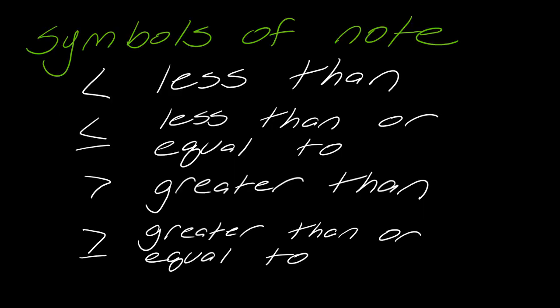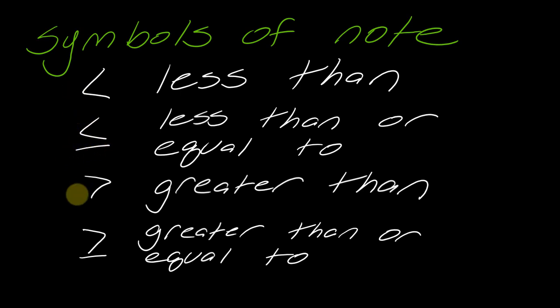With linear inequalities, the first thing we've got to review are just the symbols. So with inequalities you have these four symbols: less than, less than or equal to (it's got that little bar), greater than, and greater than or equal to (it's got that bar). The way I remember the less than symbol is that it kind of looks like a messed up L.